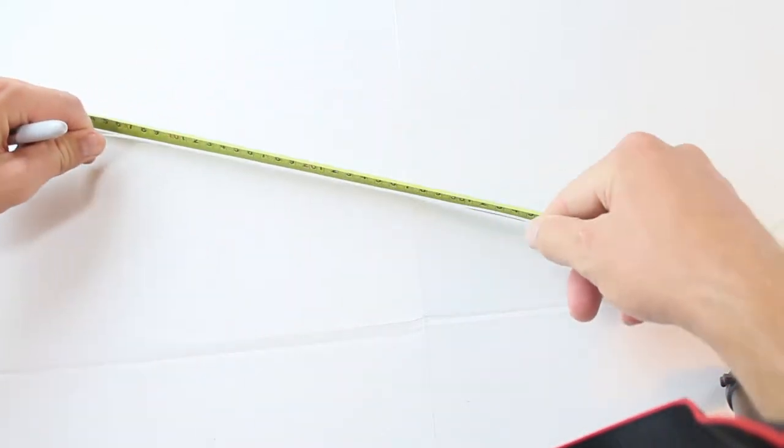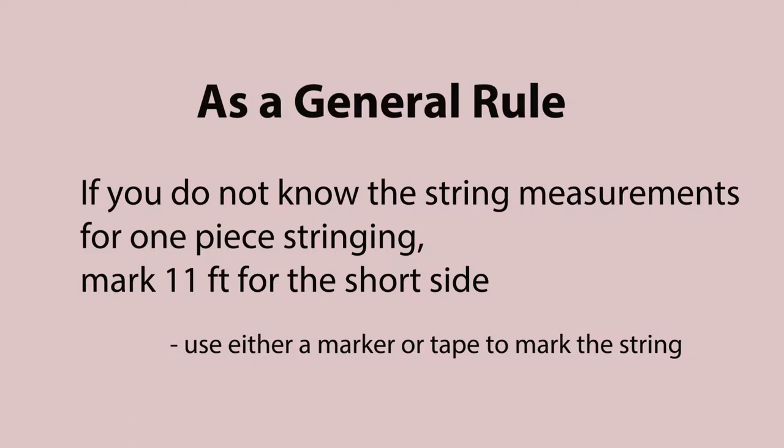I can tell you as a general rule, when you string using the one-piece stringing method, if you don't know the measurements of the string, a good rule of thumb is to measure out 11 feet and mark that point of the string.